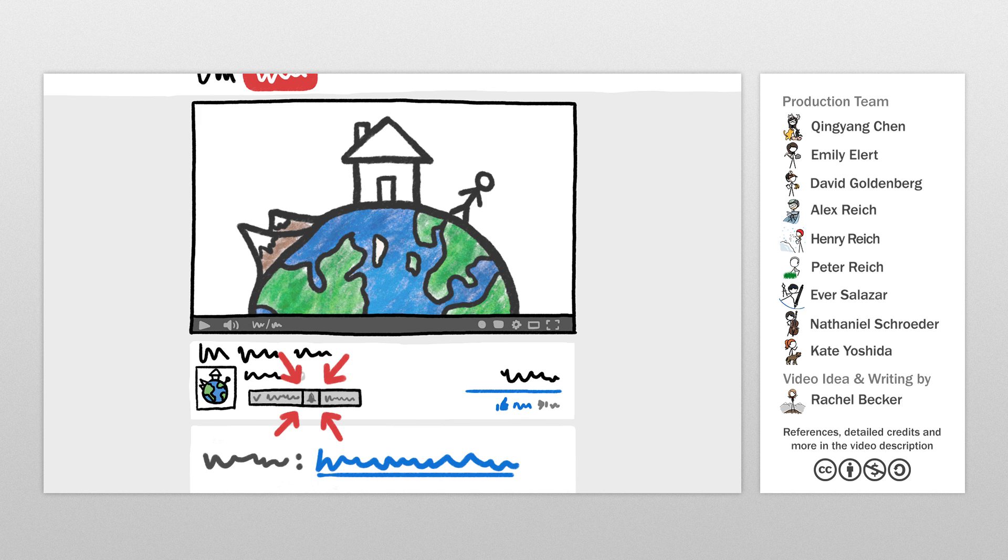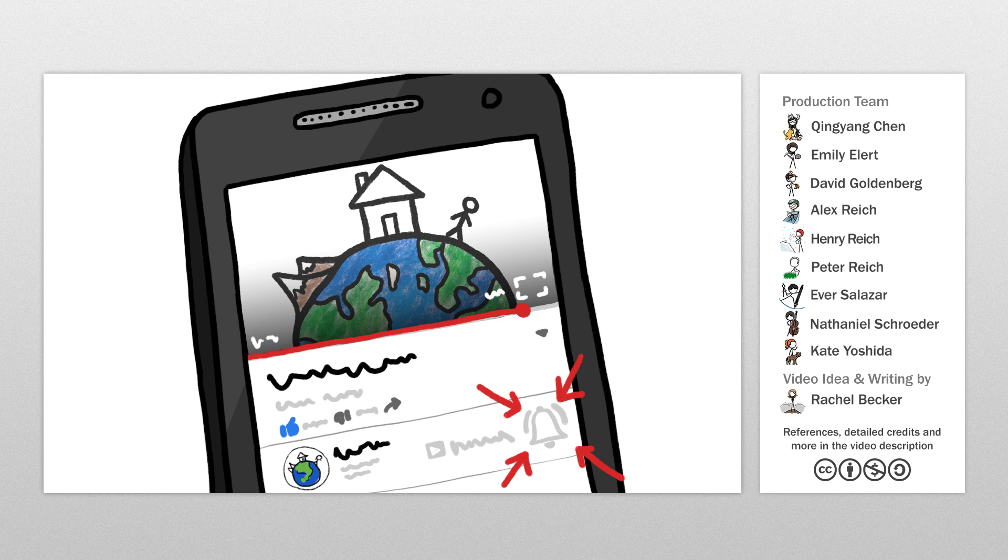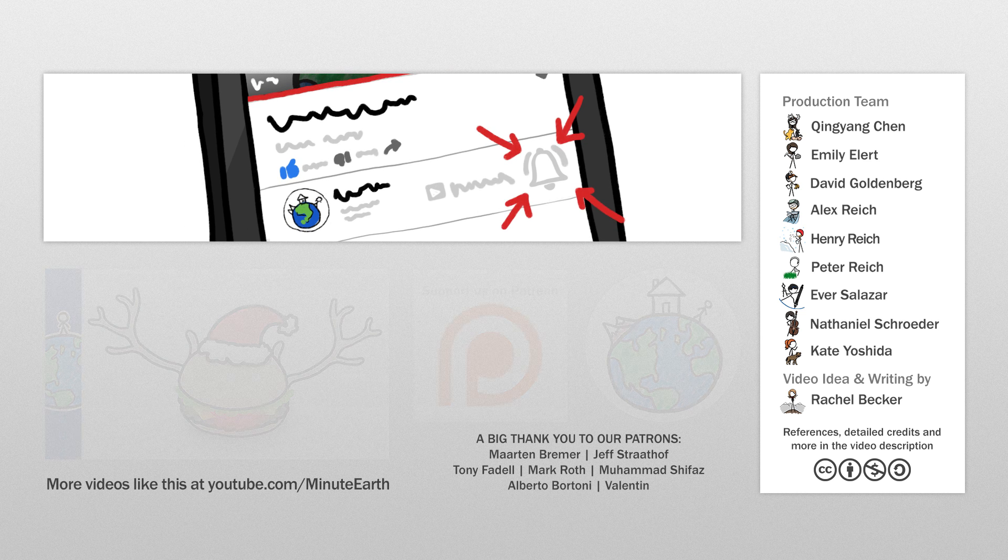And while you're down there, will you find the notification bell next to the subscribe button and click on it? YouTube has changed how it notifies subscribers, and this is the best way to make sure you find out when we post a new video. You can do the same thing on your phone or tablet. If you don't see the bell, make sure you're subscribed in the first place. Thanks, and we'll see you next time.